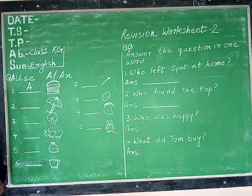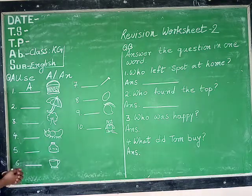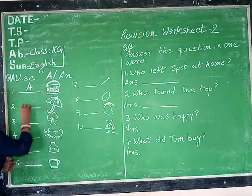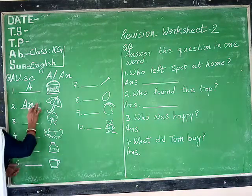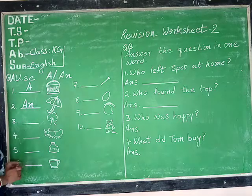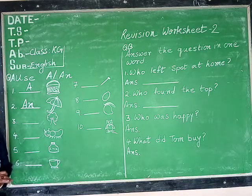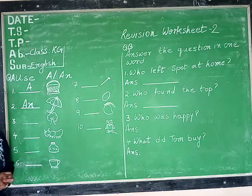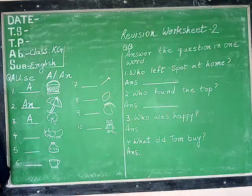Next comes umbrella. You have identified very well — there is an umbrella, and umbrella starts with U, so we are going to write 'an umbrella.' Next comes tree, and tree starts with T — T for tree, so it is a consonant. So it is 'a tree.'